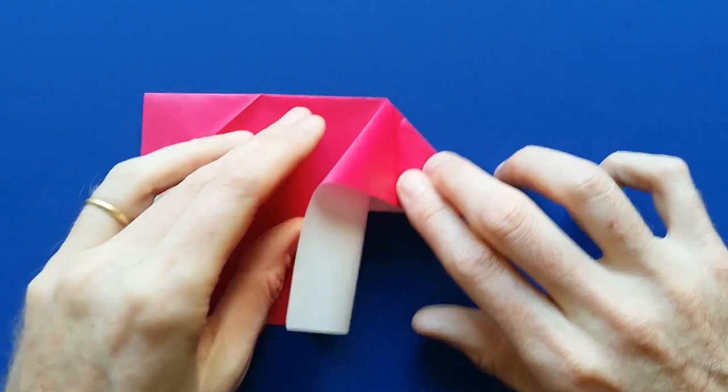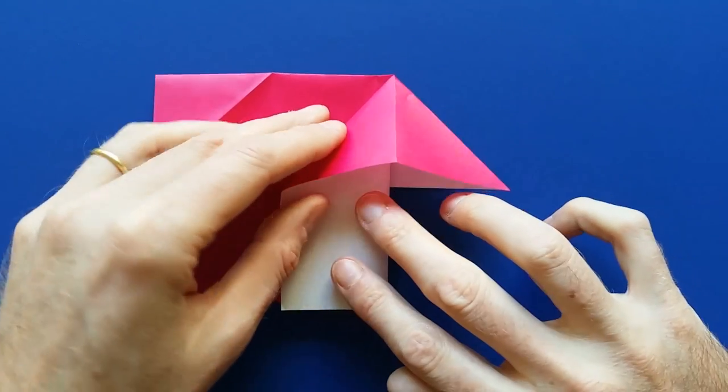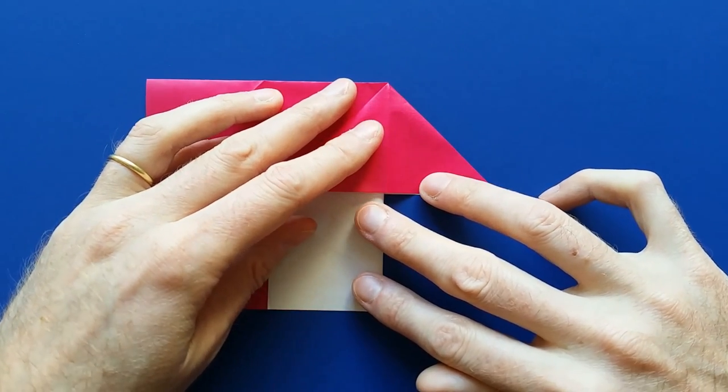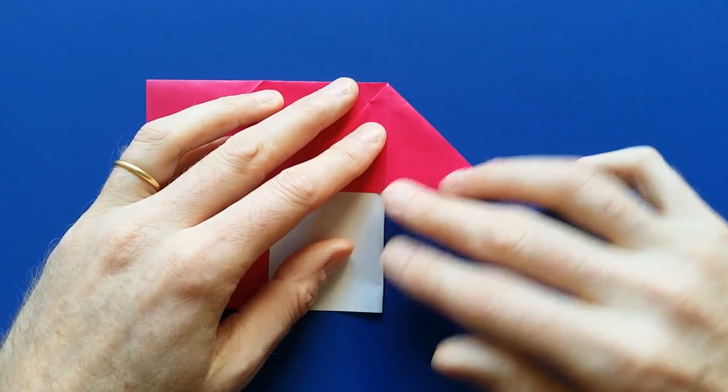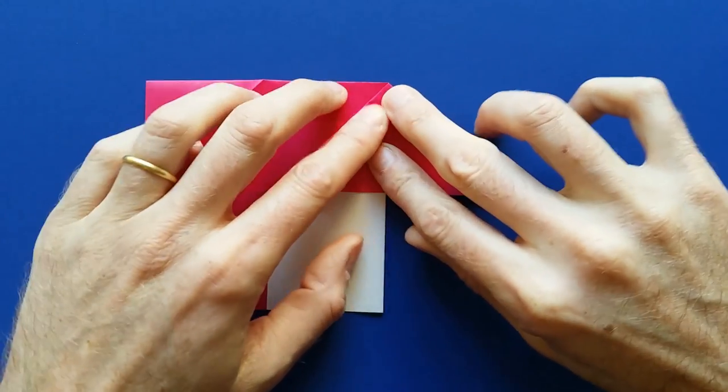And once it's inverted, you want to pay attention to this edge. It needs to stay aligned to the bottom. Like this. And then you can flatten the fold and mark it all the way.